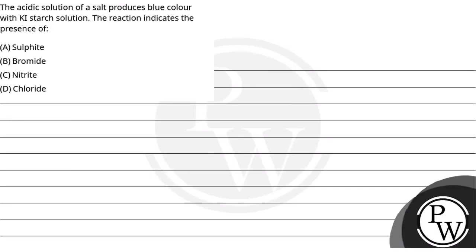Hello guys, let's read the question. The question says the acidic solution of a salt produces blue color with KI starch solution. The reaction indicates the presence of sulfide, bromide, nitrite, or chloride. So first of all, we know the key concept of this question.